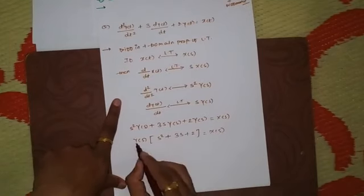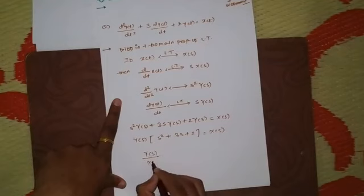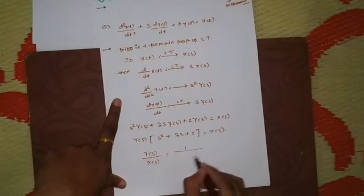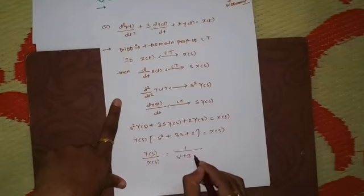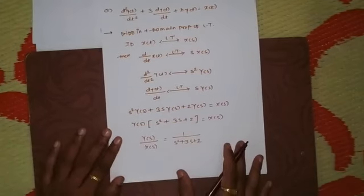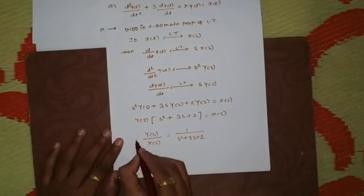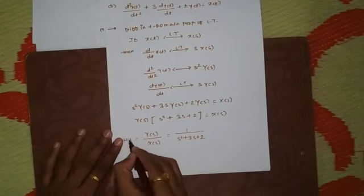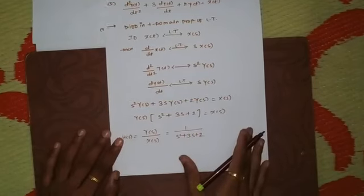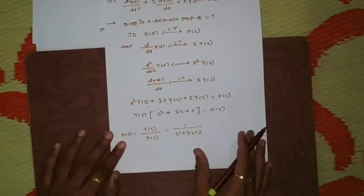Now dividing Y(s) by X(s) gives 1/(s² + 3s + 2). This is output divided by input, which implies the transfer function H(s). So we got H(s) = 1/(s² + 3s + 2).